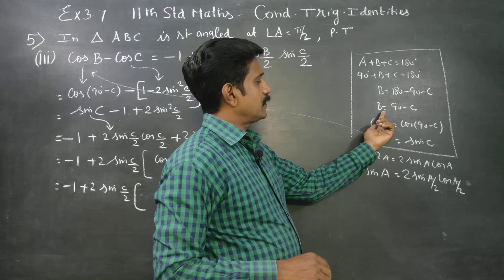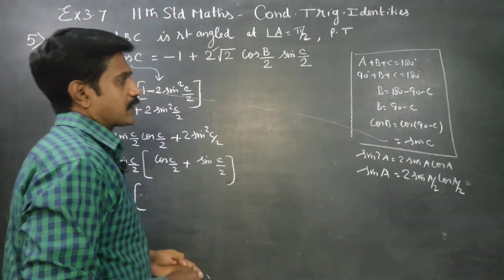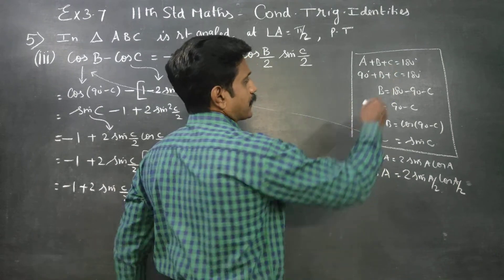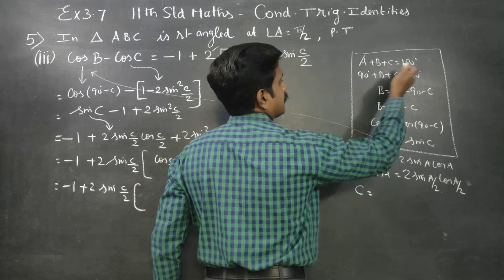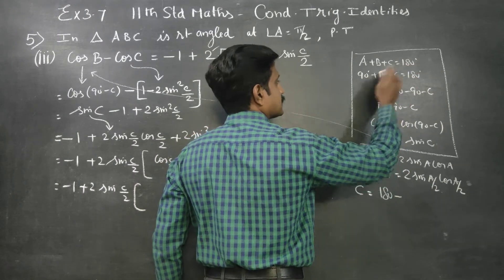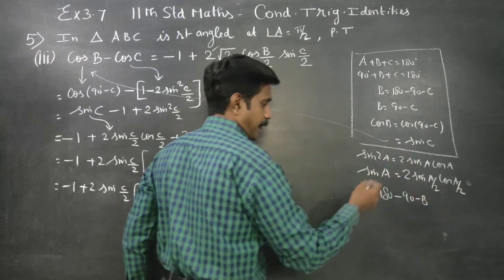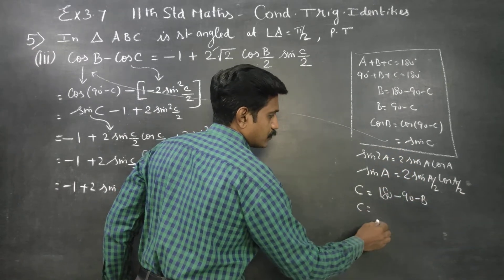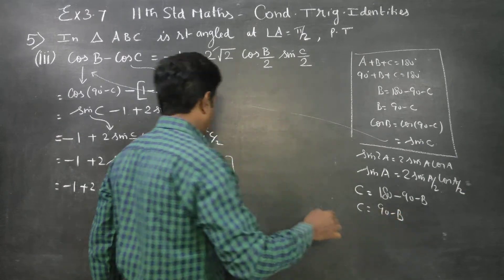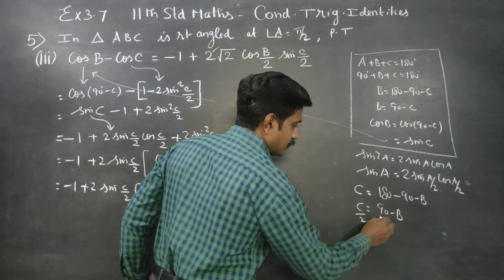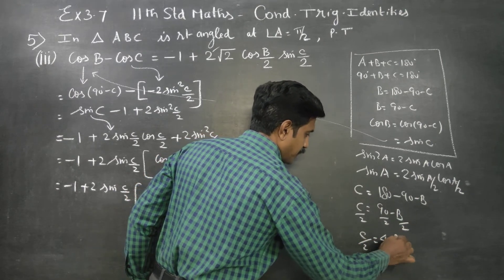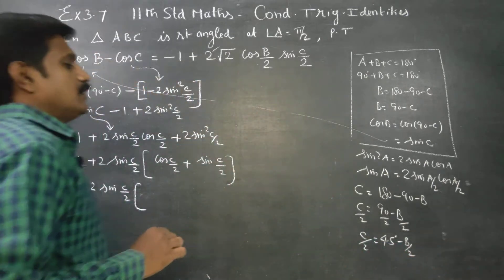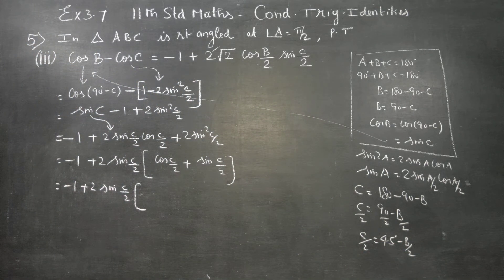Again, b is equal to 90 minus c, so c is equal to 90 minus b. Now c by 2 is equal to 45 degrees minus b by 2.